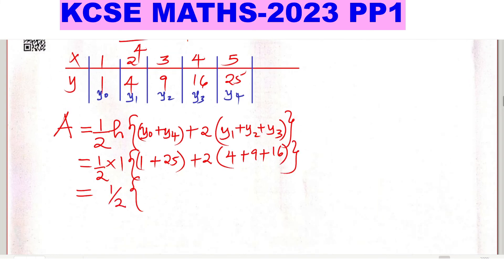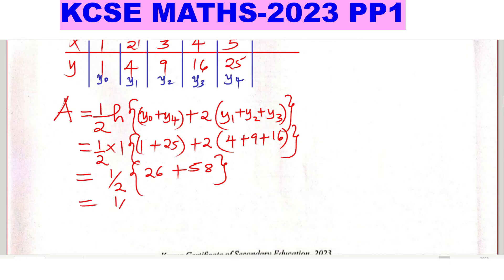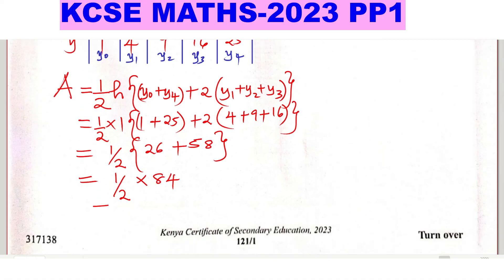This equals half times 1, which is half, then 1 plus 25 gives 26. Plus we add these: 4 plus 9 is 13, 13 plus 16 is 29, 29 times 2 gives 58. Then we have half multiplied by the sum: 26 plus 58 is 84, so half of 84 gives 42 square units.